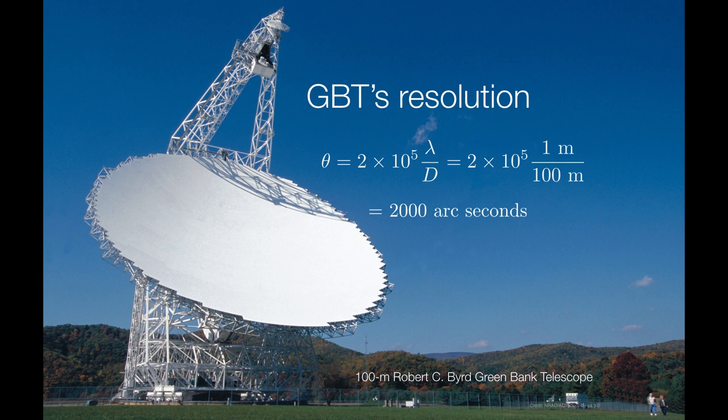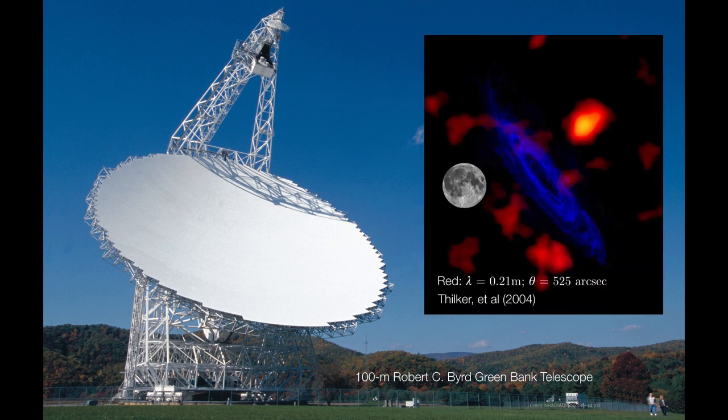What would a radio image look like? The blue blob that you see at the center, that is the Andromeda galaxy. And the red blobs are that which the Green Bank Telescope sees. For some additional visible reference, there is the full moon shown there. These glowing red blobs radiate at a radio wavelength of 21 centimeters. So, that means that the angular resolution that Green Bank achieves at this wavelength is about 525 arc seconds. It's still much, much lower resolution than the human eye.